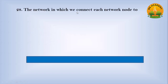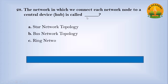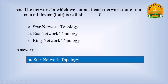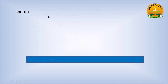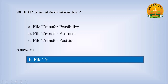The network connecting nodes to a central device hub is called dash. Option A Star Network Topology, option B Bus Network Topology, option C Ring Network Topology. Answer: A. Number Star Network Topology. FTP is an abbreviation for. Option A File Transfer Possibility, option B File Transfer Protocol, option C File Transfer Position. Answer: B. Number File Transfer Protocol.